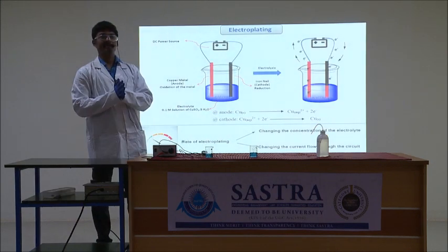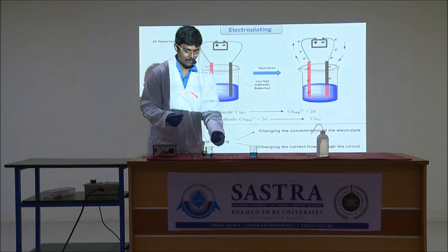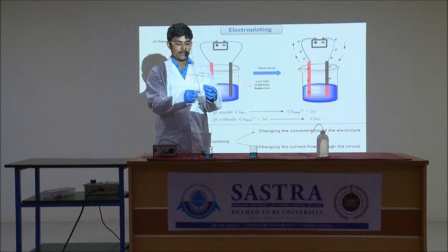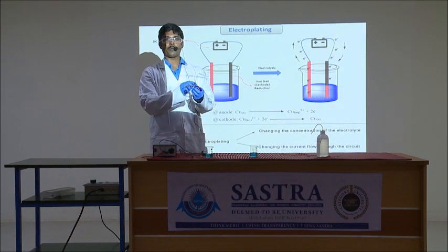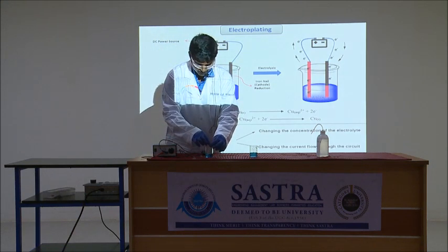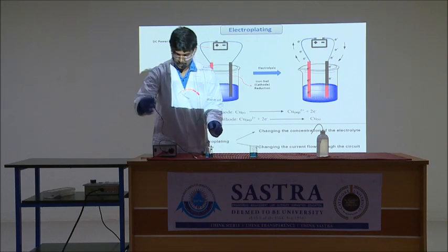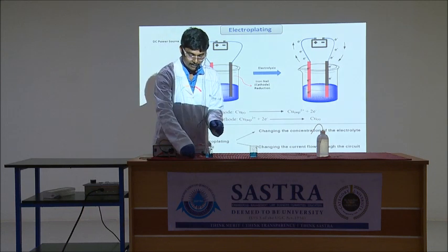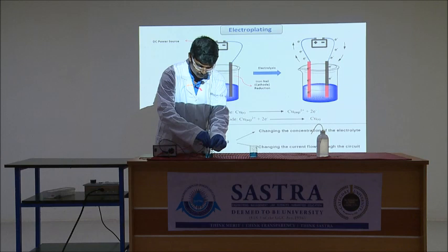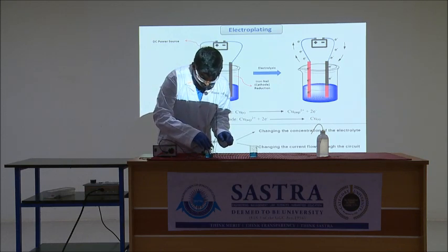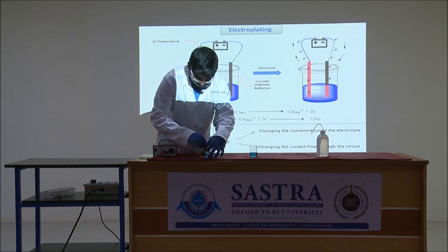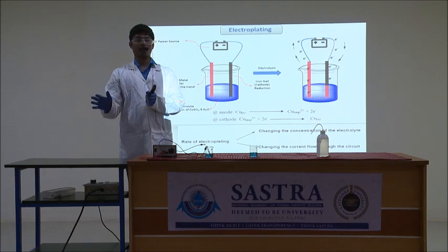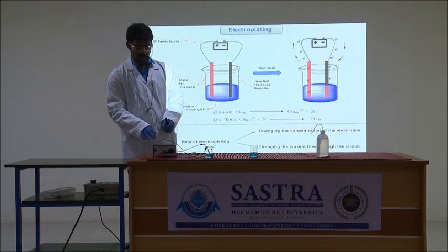This is a schematic representation of the experiment. We take copper wire and iron nail and insert them into the copper sulfate solution. Before inserting, we have to make sure the copper wire and iron nail are properly cleaned and washed. We then connect them to the power source: the copper must be connected to the positive terminal of the power source and the iron nail should be connected to the negative terminal. We must ensure that the two electrodes do not touch each other throughout the electrolysis process.